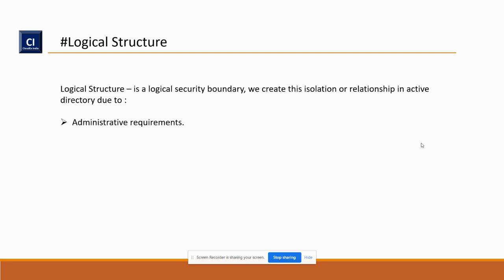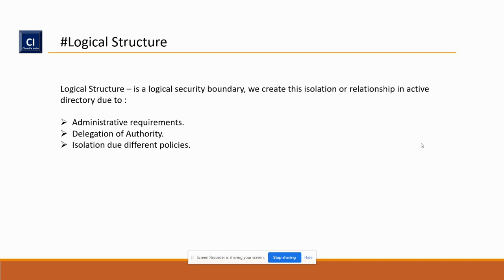We create this isolation or relationship in Active Directory due to several reasons. First, administrative requirement — very important. You have to define the administrative purpose: who will access what, who can reset the password of a user, who can add users into a group. These things are known as the delegation of authority. The next reason for isolation is due to different policies. In an organization there are several requirements — servers in different OUs have different policies for patching, clients have different policies, users have different policies.